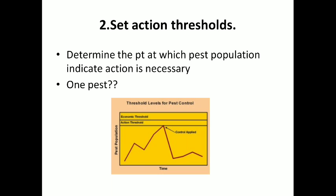The next step is to set action threshold. Before taking any action, managers should decide whether action is needed or not. If there is only one pest, that means action is not needed.